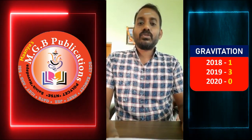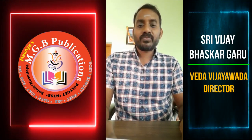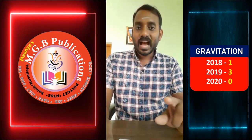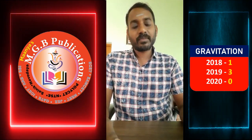Gravitation chapter: in 2018 there was 1 question, in 2019 there were 3 questions, and in 2020 there were no questions. Topics include the relation between small g and capital G, acceleration due to gravity, universal gravitational constant, variation of g due to the shape of the Earth — which bulges at the equator and is flattened at the poles. The formula for g at a given latitude is g at latitude = g₀(1 - formula), and weight variation due to Earth's rotation speed. Also covered: potential energy at a height from Earth's surface.